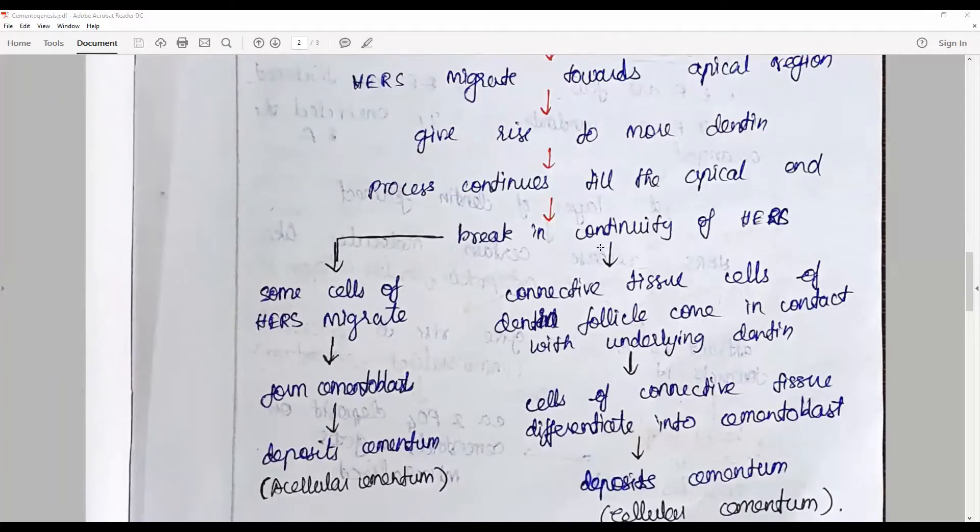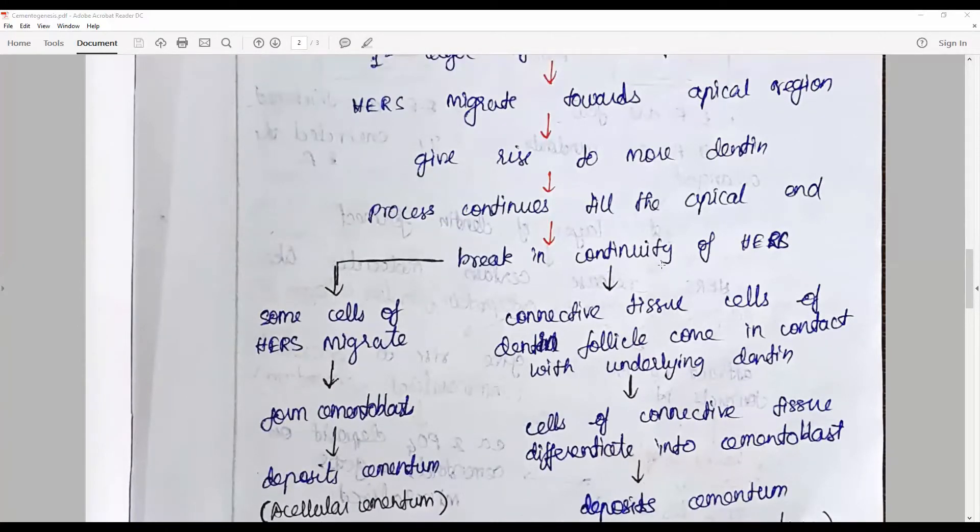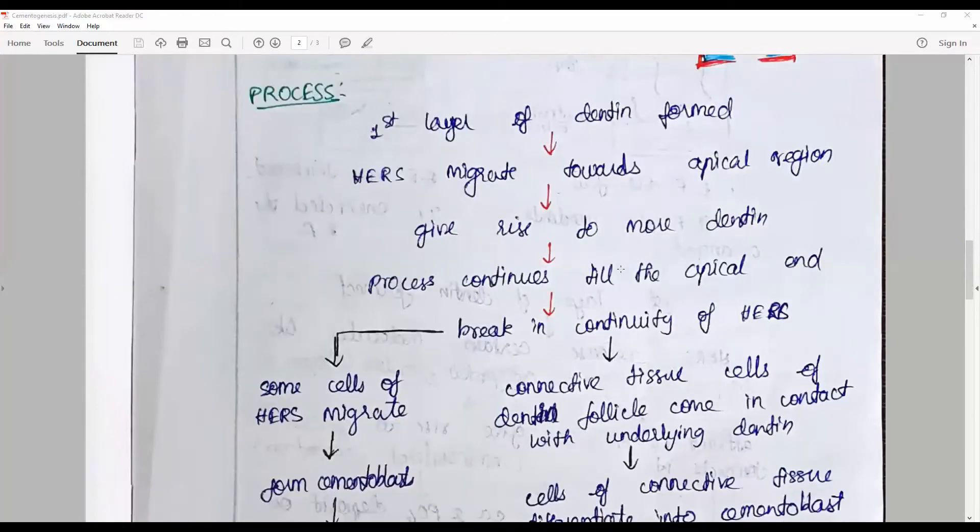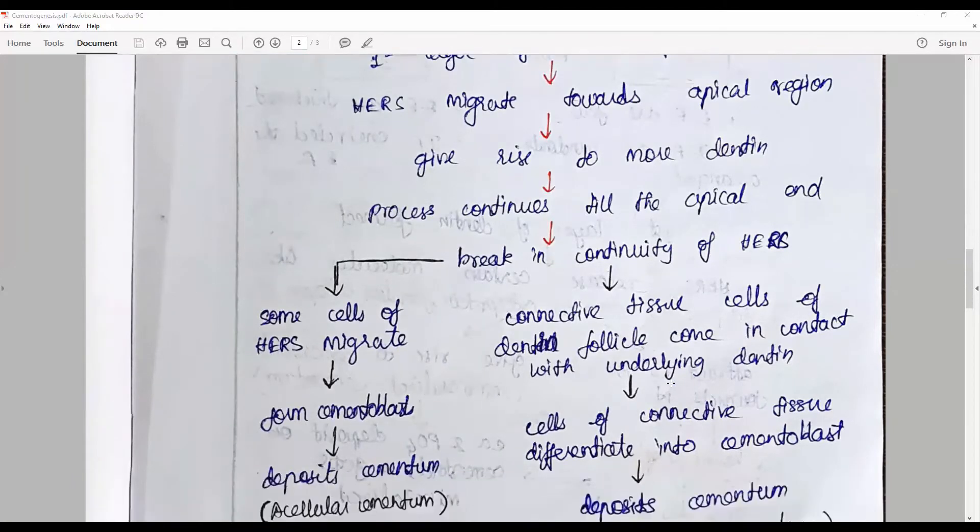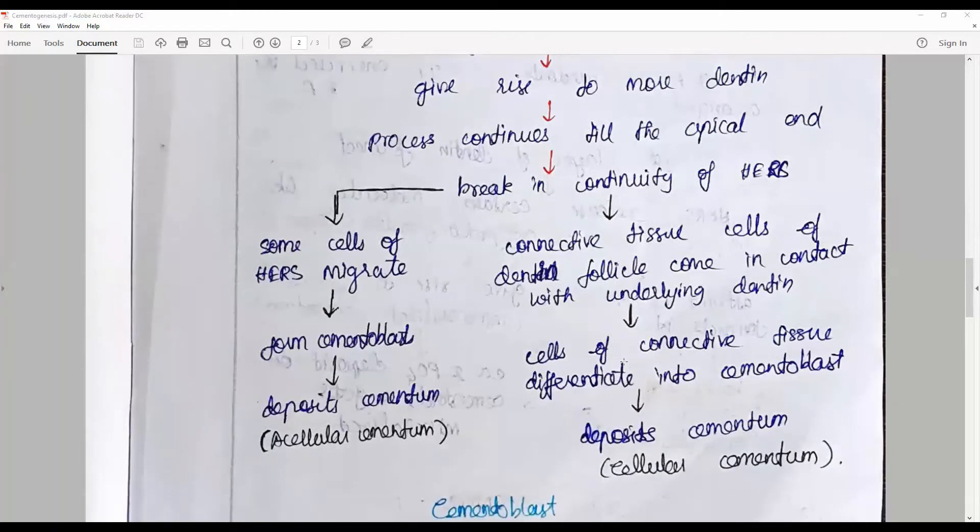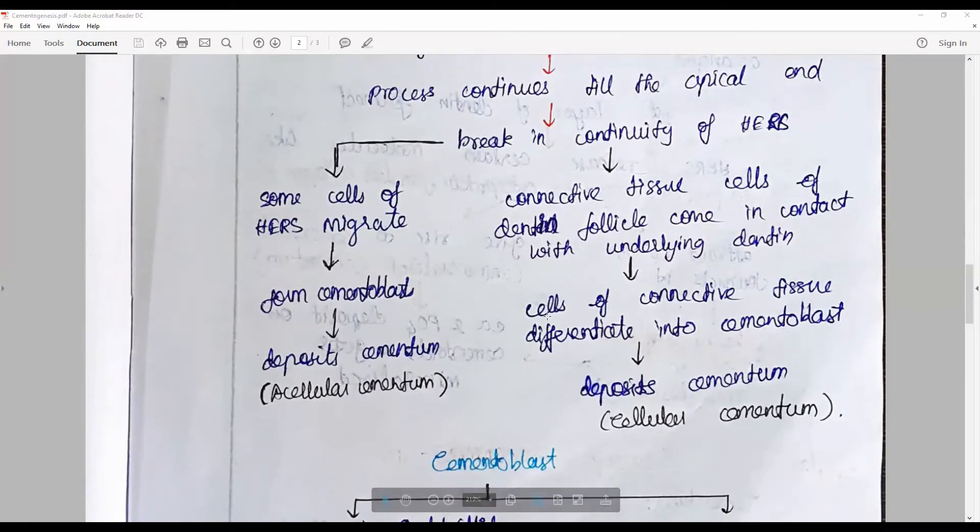This breakage exposes the newly formed dentin to the surrounding dental sac. The ectomesenchymal cells come into contact with the dental follicular sac, and this exposure causes the ectomesenchymal dental sac to differentiate into cementoblasts. These cementoblasts are responsible for the deposition of cellular cementum, and the HERS cells migrate early to form another kind of cementum-secreting cells called acellular cementum.